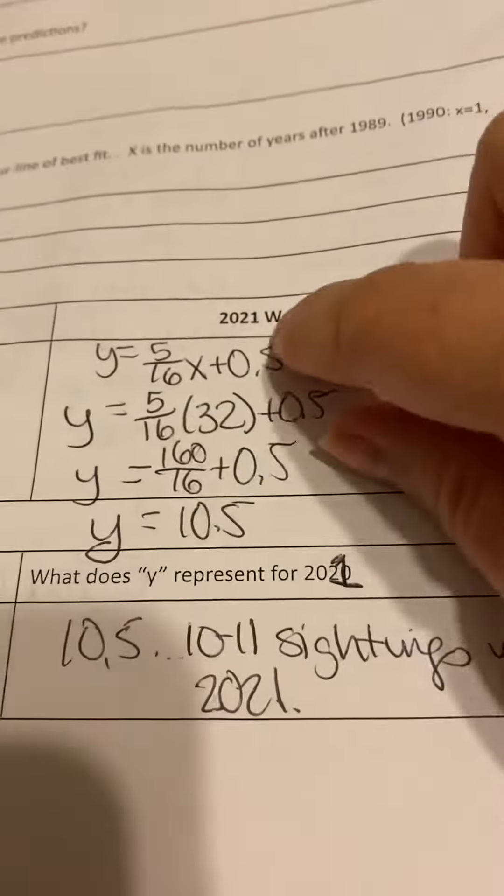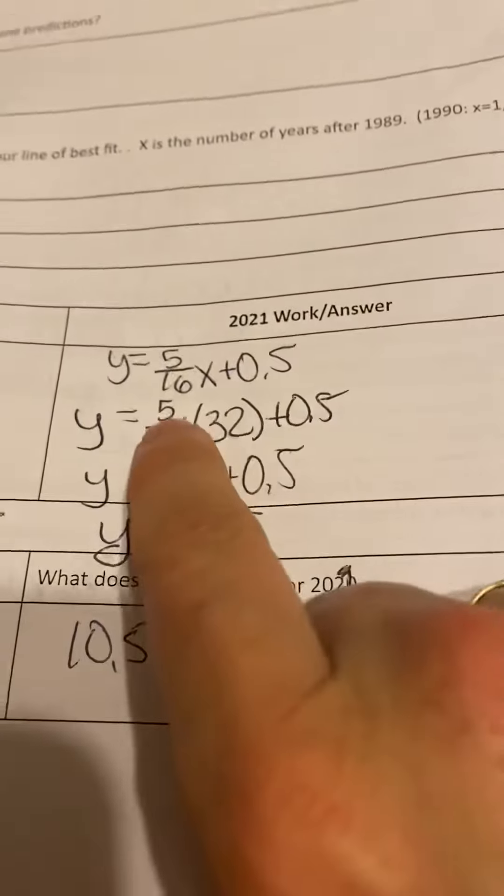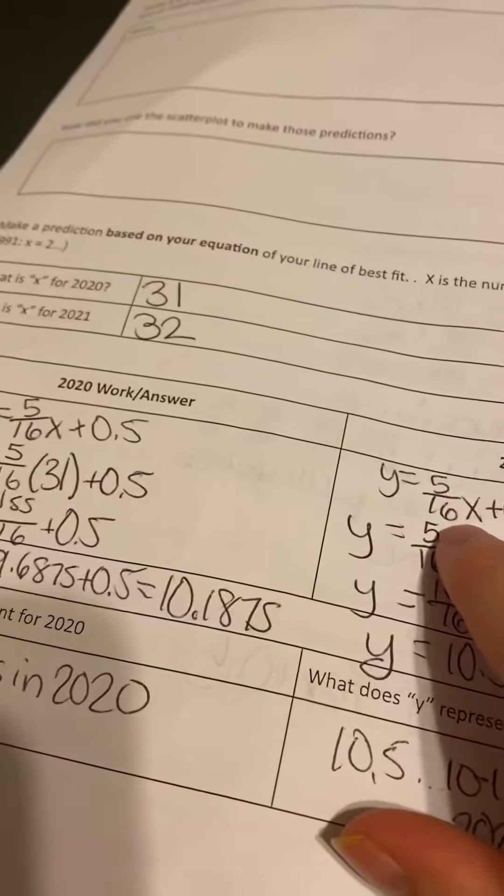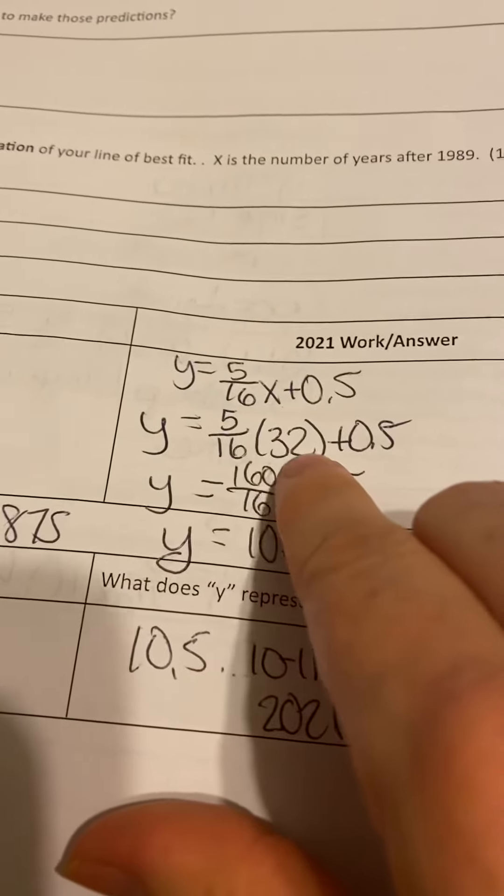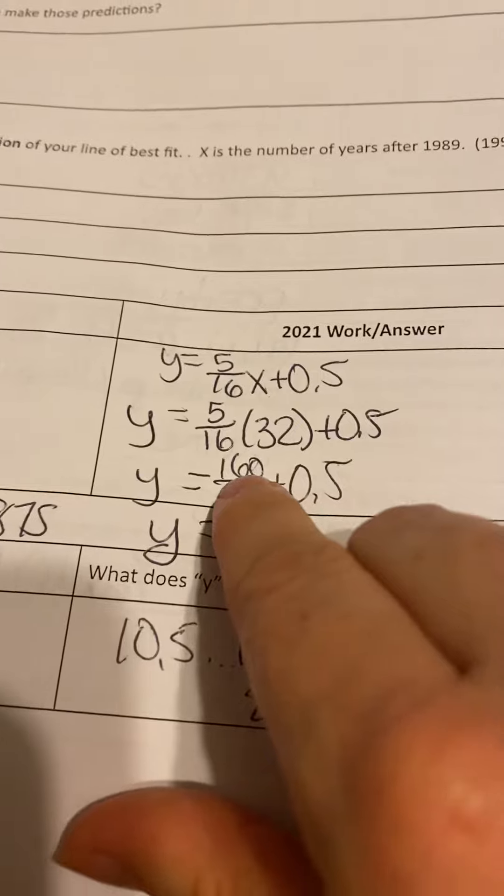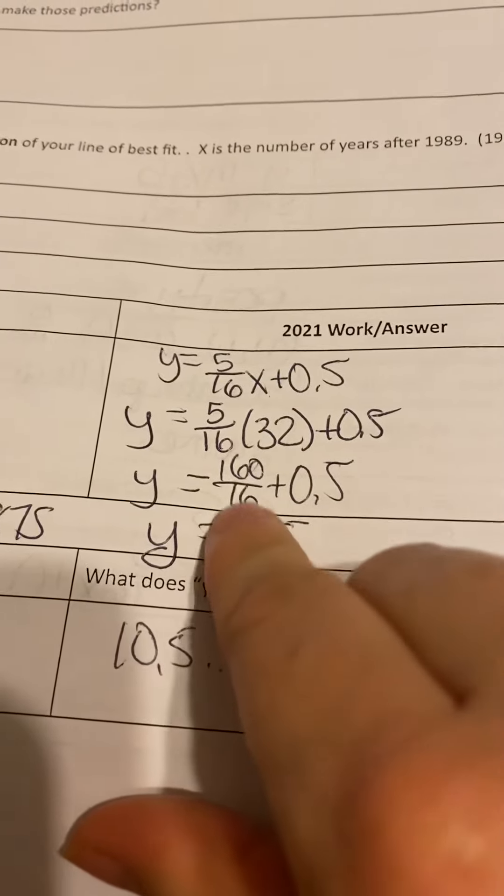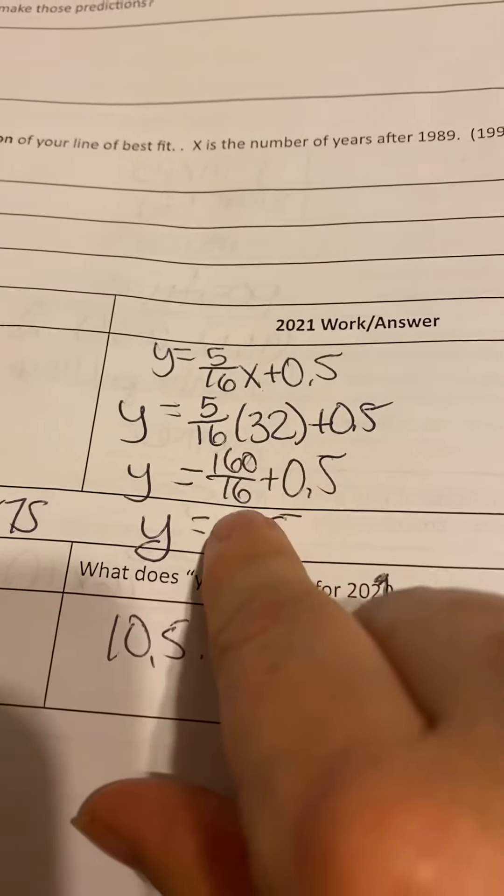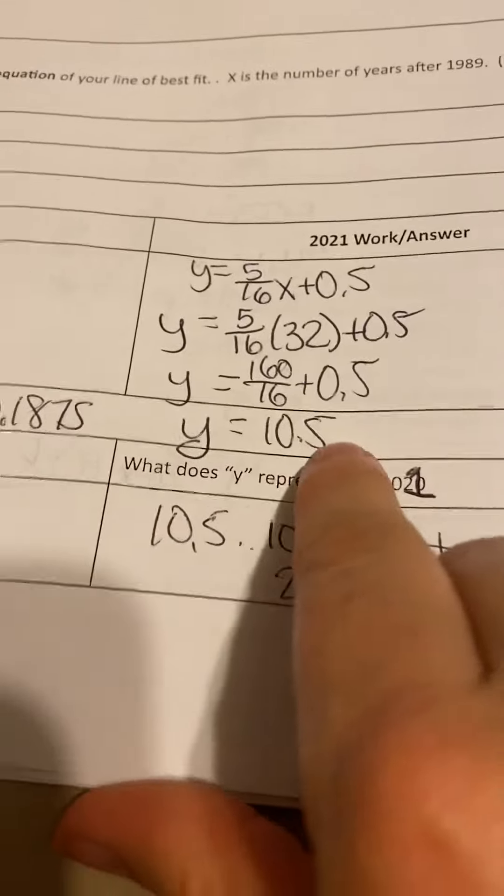In 2021, you will do the same thing, except this time, 2021 would be year 32. So 5 times 32, which is 160 over 16, plus 0.5. So then 160 divided by 16, you get 10.5.